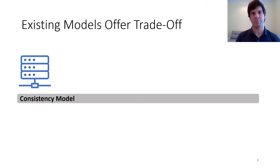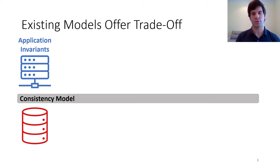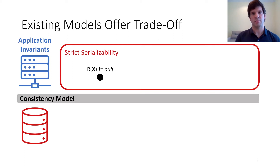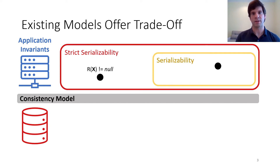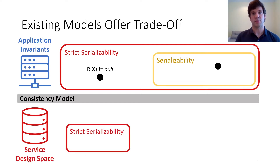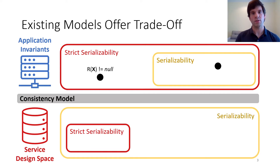Consistency models impact both applications and services. For applications, strong consistency models ensure a large set of invariants hold, while weaker models guarantee fewer invariants. For example, an invariant stating that a read never returns null may hold while an application uses a strictly serializable database, but not with a serializable one. On the other hand, a weaker invariant can hold with both. For services, strong consistency models restrict the space of designs, while weaker models allow more possibilities — meaning services with weaker consistency can achieve better performance.